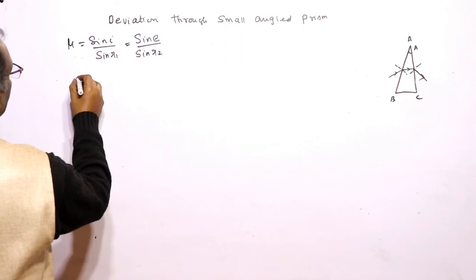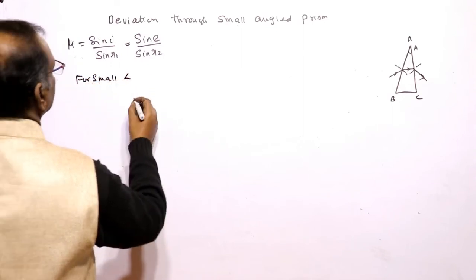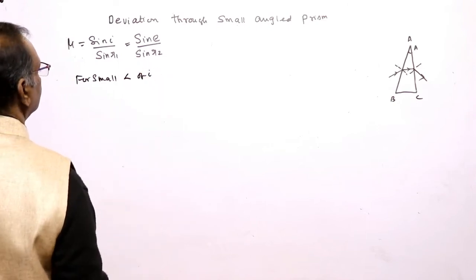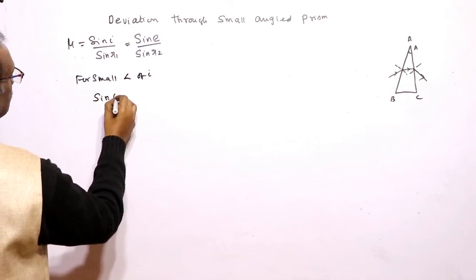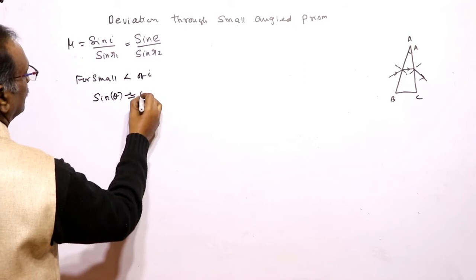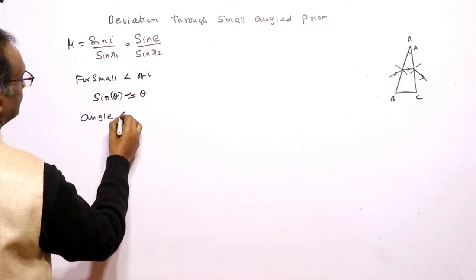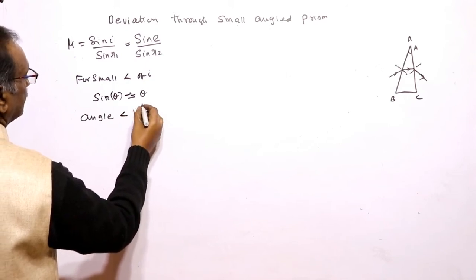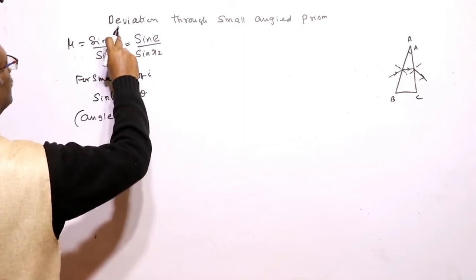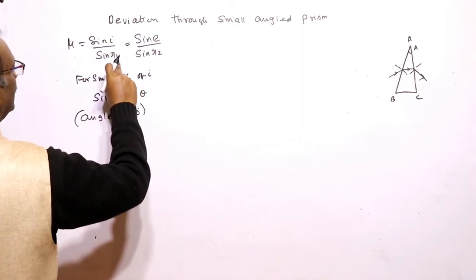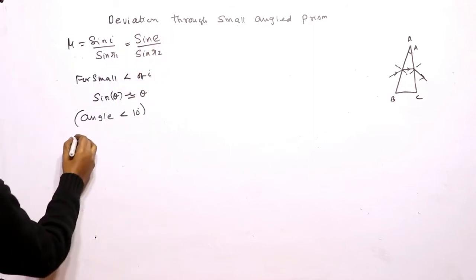Now, for small angles — that is, angles less than 10 degrees — sin theta is approximately equal to theta. So we can say: sin I is equal to I, sin R1 is equal to R1, sin E is equal to E, and sin R2 is equal to R2.